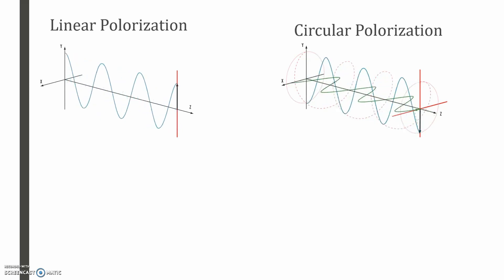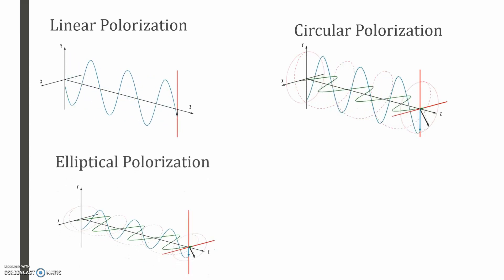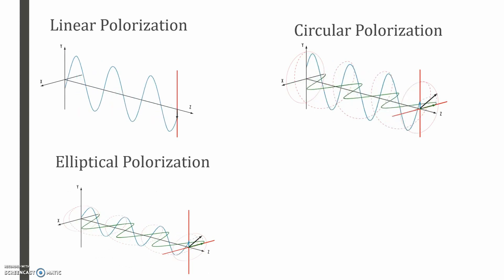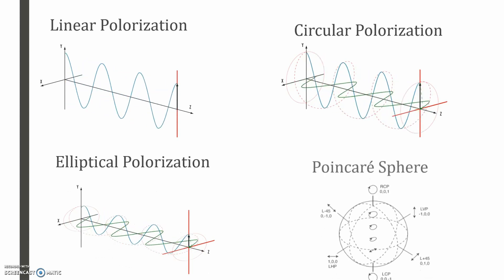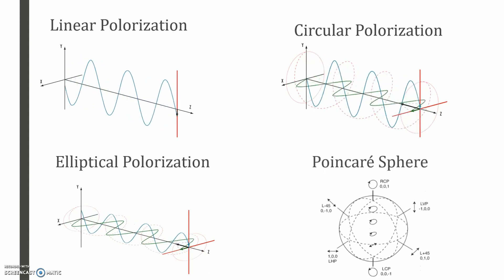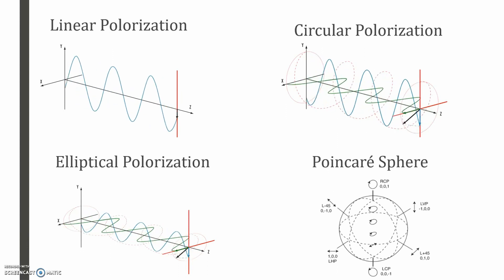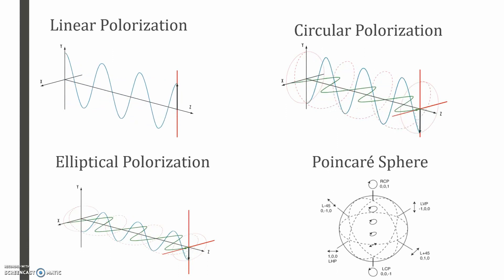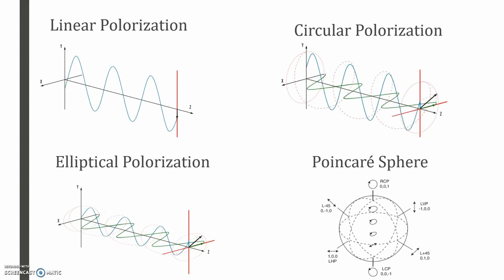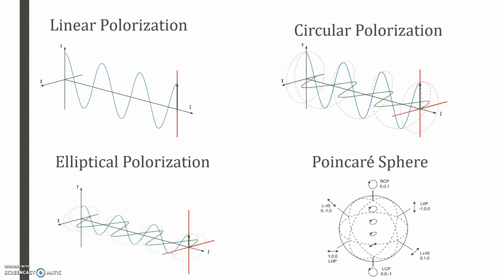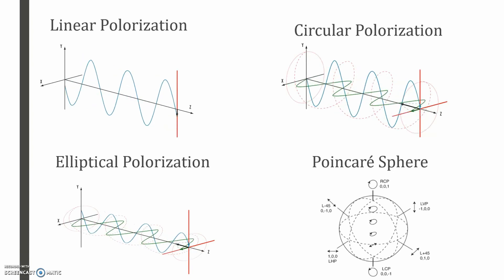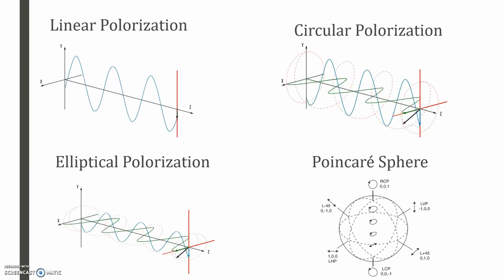If the components have a phase difference that is not 90 degrees, it can be classified as elliptically polarised. All of these states can be represented on a graphical tool called the Poincare sphere. As you can see, linear polarisation states are represented by the equators, whilst the upper and lower poles represent the right-hand and left-hand circular polarisation states. All other states on the sphere are elliptical.